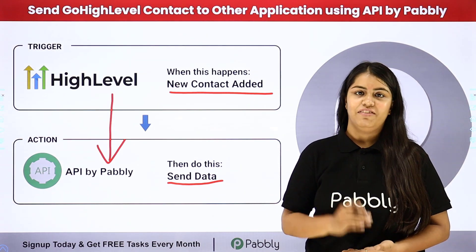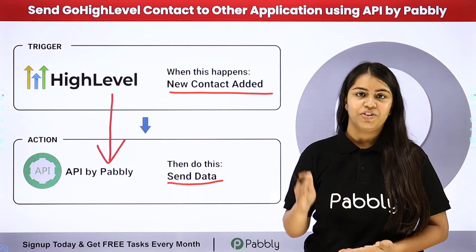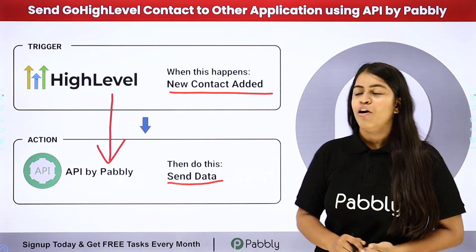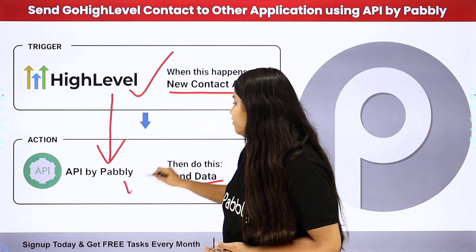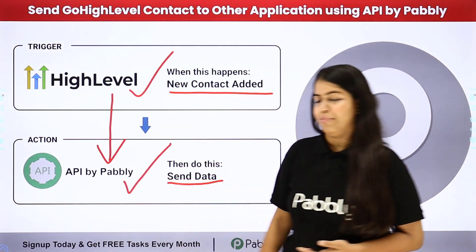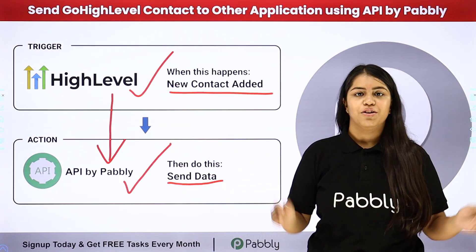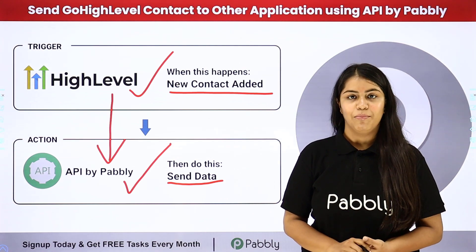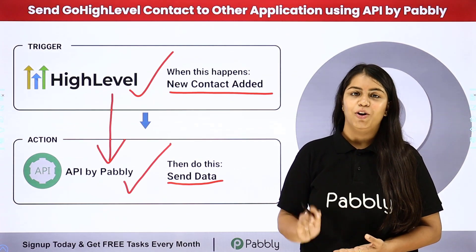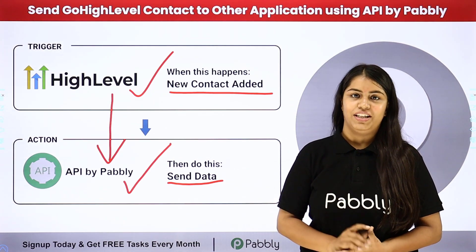In Pabbly we have the concept of trigger and action. For the trigger we are going to use Go High Level, and for the action we are using API by Pabbly. If you also wish to learn this process step by step, follow me through the screen.